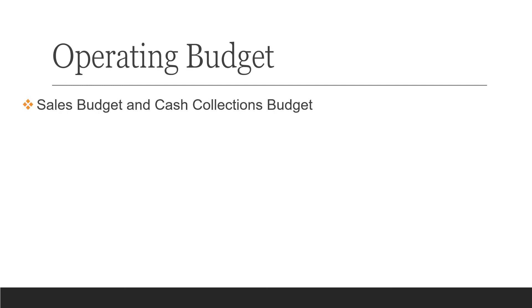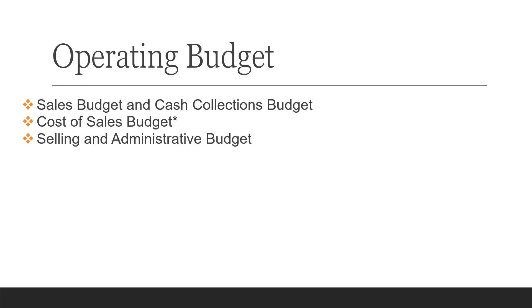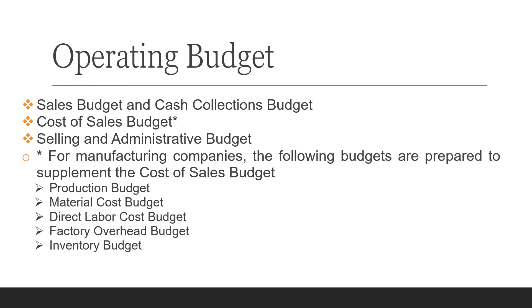Let us present what composes the operating budget. The operating budget is composed of the sales budget, cash collections budget, cost of sales budget, and selling and administrative budget. For manufacturing companies, the following budgets are also prepared to supplement the cost of sales budget: the production budget, material cost budget, direct labor cost budget, and factory overhead budget.